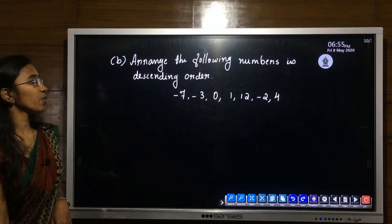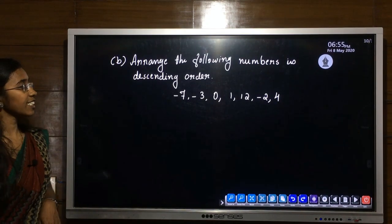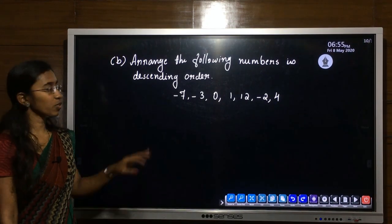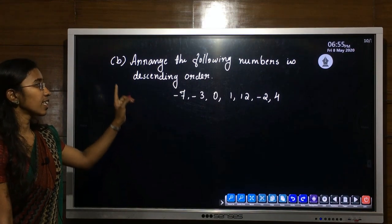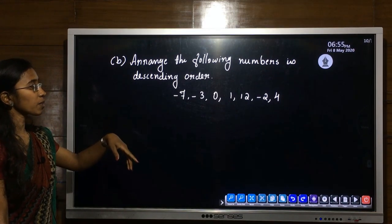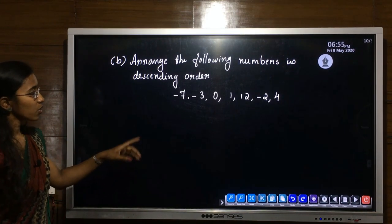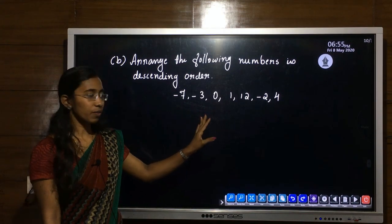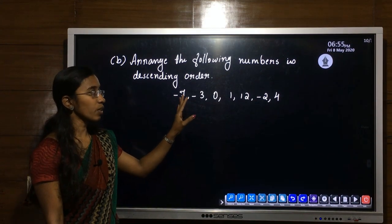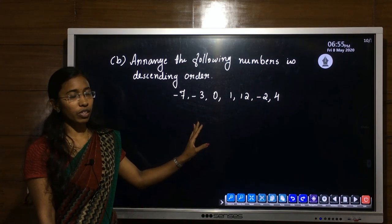Now arrange the same numbers in descending order. Descending order means decreasing order. This is similar to the previous question — just try to do it yourself.